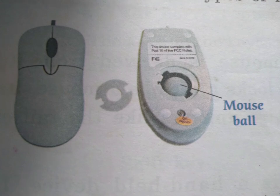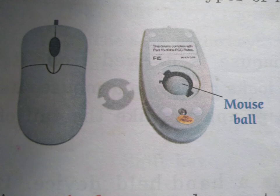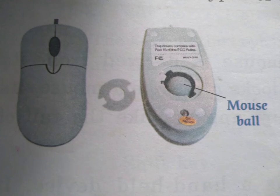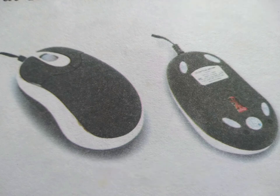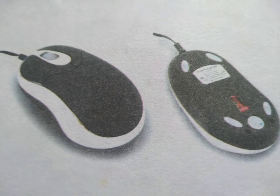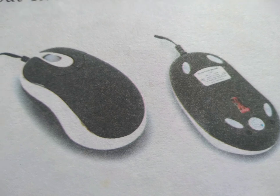Mechanical mouse — it has a mouse ball, a metal ball. Without this ball it cannot function. Optical mouse does not have a ball, but it uses a laser beam — a beam of light for detecting the movement of the mouse.